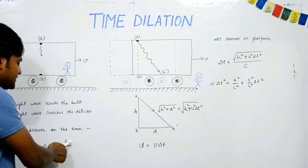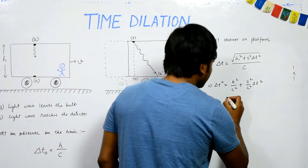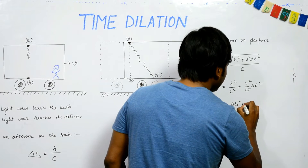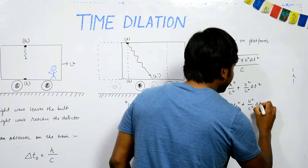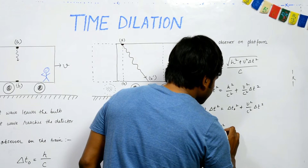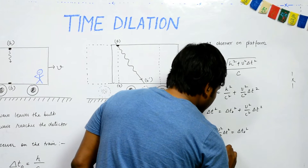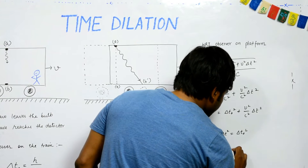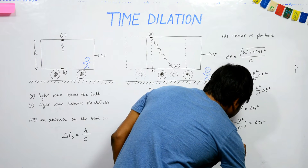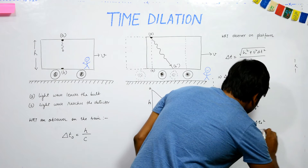We already know that H/C is the time period ΔT₀ measured by the observer in the train frame. Substituting: ΔT² = ΔT₀² + (v²/C²)ΔT². Rearranging: ΔT² − (v²/C²)ΔT² = ΔT₀², so ΔT²(1 − v²/C²) = ΔT₀². Taking the square root gives the time dilation formula: ΔT = ΔT₀ / √(1 − v²/C²).